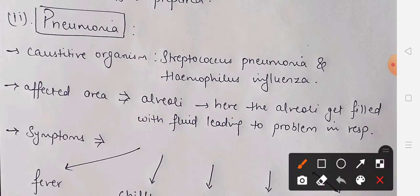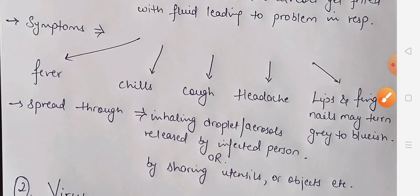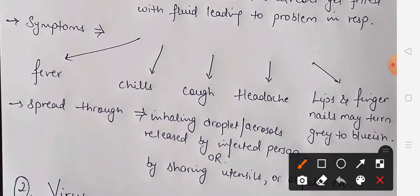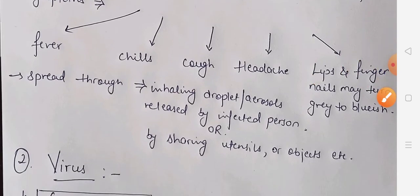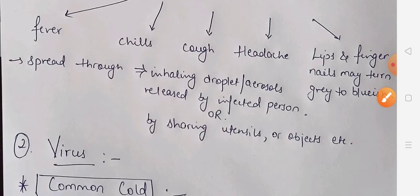Pneumonia is caused by Streptococcus pneumoniae and Haemophilus influenzae. The affected organ in pneumonia is the alveoli, where fluid fills up inside the alveoli, causing problems in respiration. Symptoms of pneumonia include fever, chills, cough, and headache. In severe cases, the lips and fingernails of the individual may turn greyish-blue. The disease can spread by inhaling droplets or air aerosols from an infected person, or by sharing utensils or objects with an infected person.